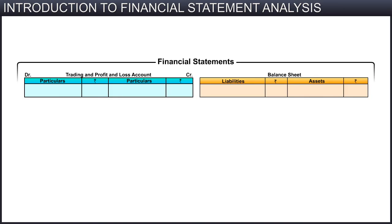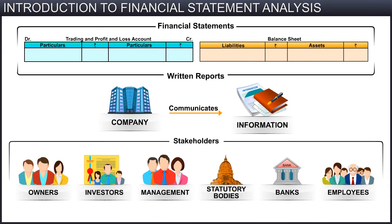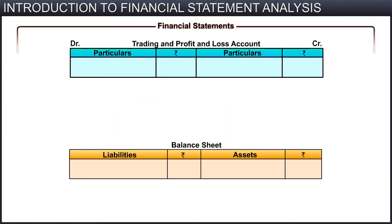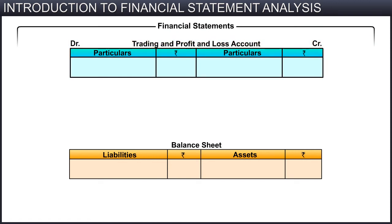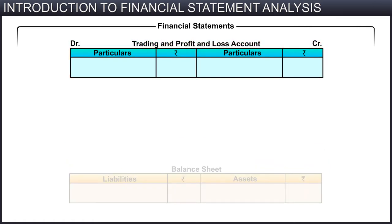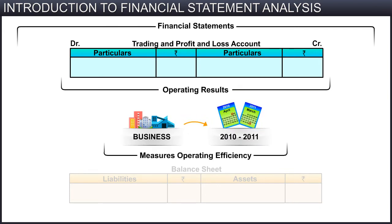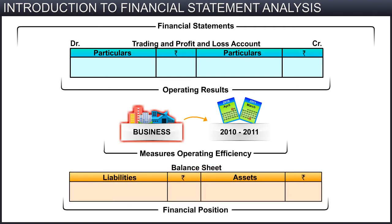Financial statements are the written reports through which a company communicates financial information to various stakeholders, enabling them to make sound economic decisions. The basic financial statements include the profit and loss account, or income statement, and the balance sheet, or position statement. The profit and loss account provides the operating results of the business for a specific period and measures the operating efficiency of the company. The balance sheet provides the financial position of the business and measures the financial health of the company.